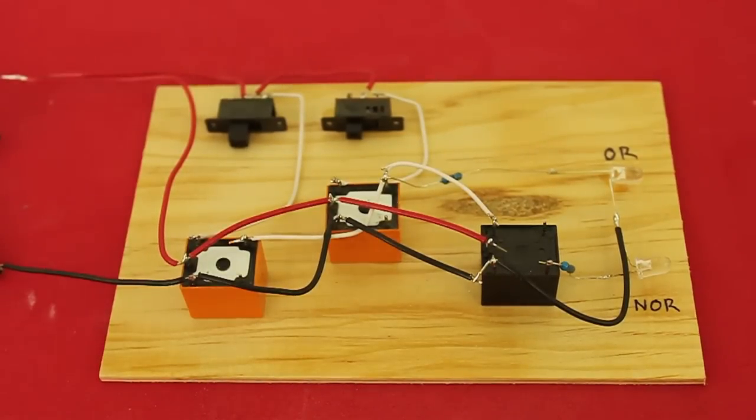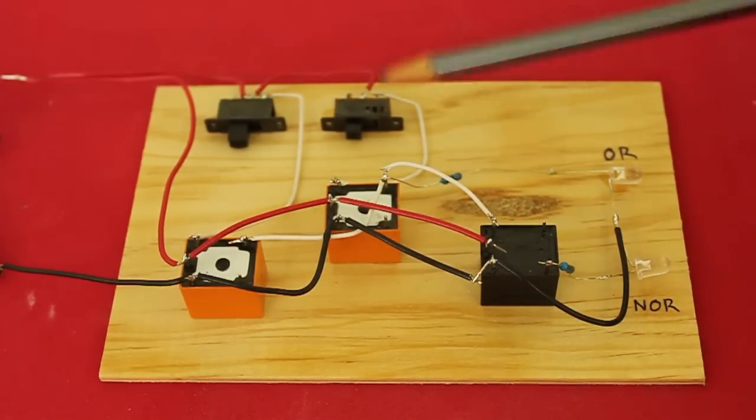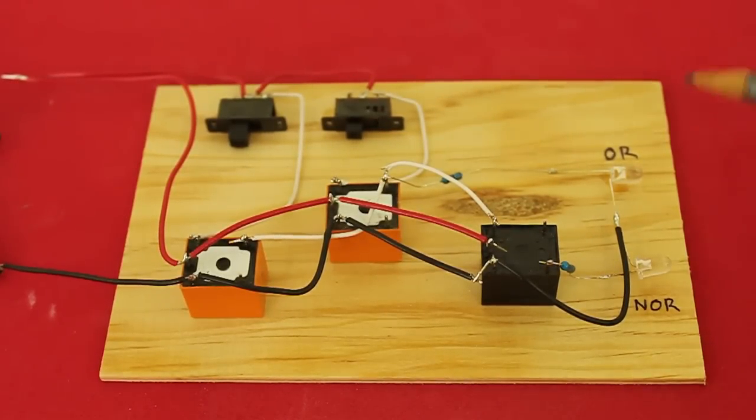Okay, here it is. As you can see, there are no diodes, only the three relays, two switches for the inputs A and B, and we have one LED for the OR gate and another for the NOR gate, each with its own resistor.